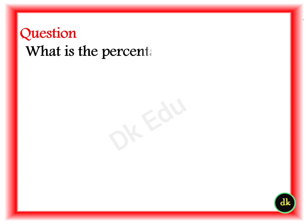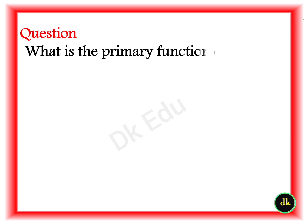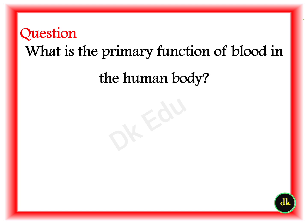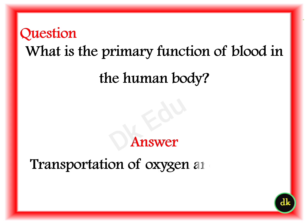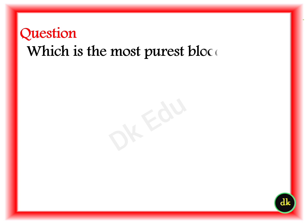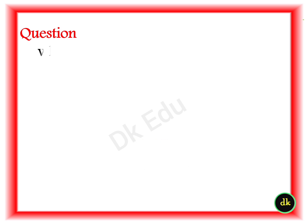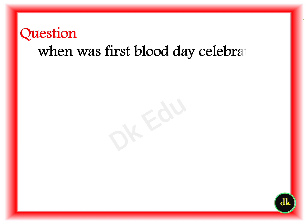Q: What is the percentage of red blood cells called? A: Hematocrit. Q: What is the primary function of blood in the human body? A: Transportation of oxygen and nutrients. Q: Which is the most pure blood group in the world? A: O negative. Q: When was the first World Blood Day celebrated? A: 2004, established by WHO.